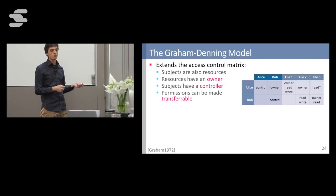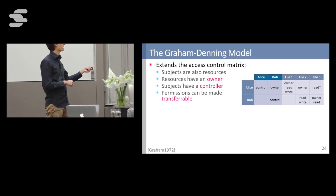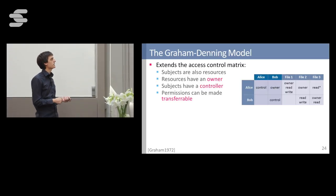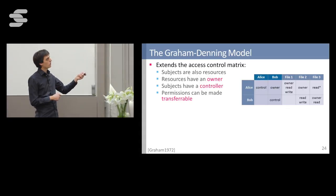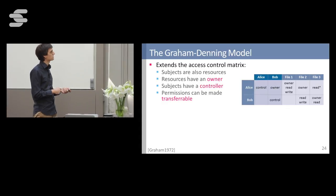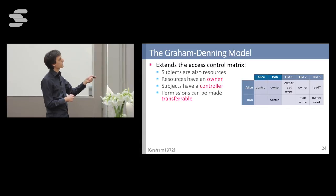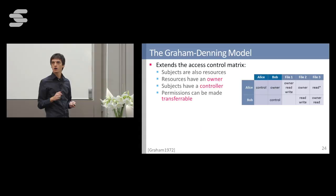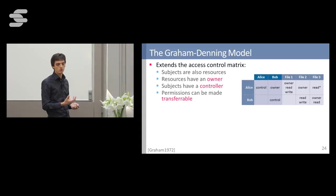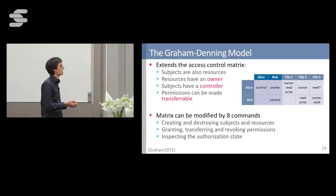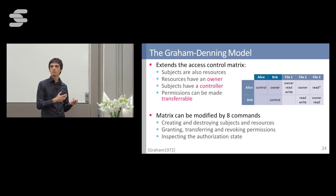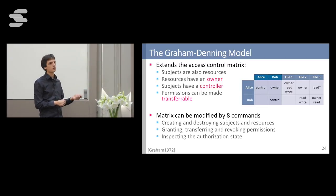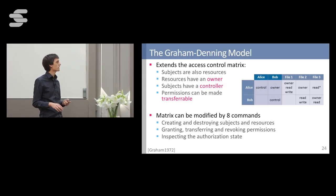To show that discretionary access control is quite challenging to get right, let's look at the Graham-Denning model, also proposed in 1972 — the 1970s were a golden age for access control. This model extends the access control matrix with new concepts: subjects are now also represented as resources, resources have an owner, subjects have a controller, and permissions can be made transferable — annotated with an asterisk. Using these concepts, the Graham-Denning model defines eight commands by which subjects themselves can modify the access control matrix, for creating and destroying subjects and resources, and for granting, transferring, and revoking permissions.